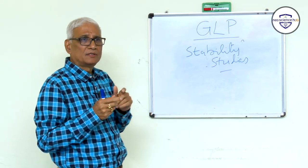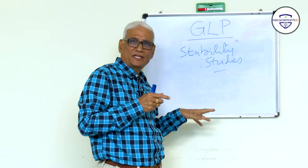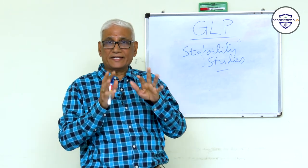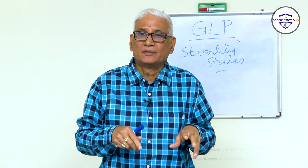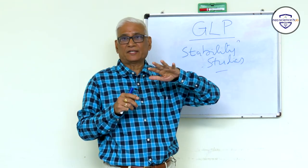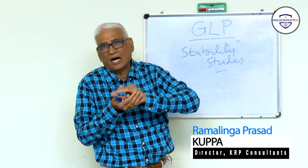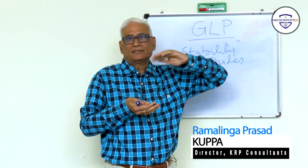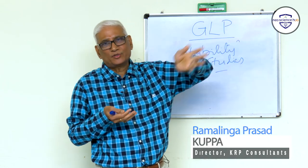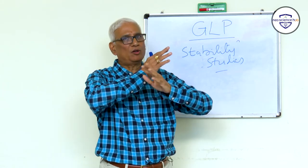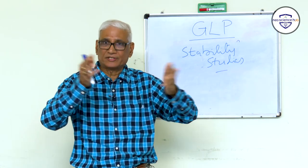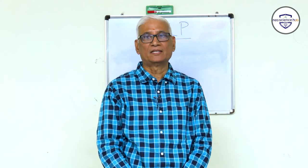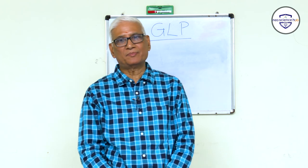To sum up, all the GLP discussions we covered are very important and everything depends on the honesty and integrity of the people working in the lab. Manufacturing results and quality totally depend on the QC — if QC is strong, manufacturing procedures will be good and results will be good. Make sure that integrity is maintained and you follow all GLP systems and procedures. Thanks for watching and hope you enjoyed the session. For any queries, please send them to info@neosciencehub.com.